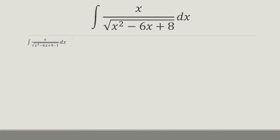First, we're going to rewrite x squared minus 6x plus 8 as x squared minus 6x plus 9 minus 1. And now we can factor out the x squared minus 6x plus 9 as x minus 3 quantity squared.